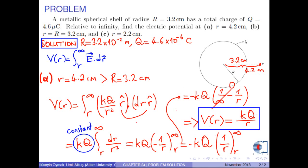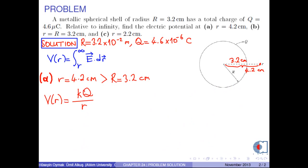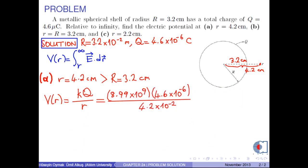Now we can insert the numerical values into this equation. As a result, we obtain the electric potential at r equals 4.2 centimeters as approximately 9.85 times 10 to the 5 volts.